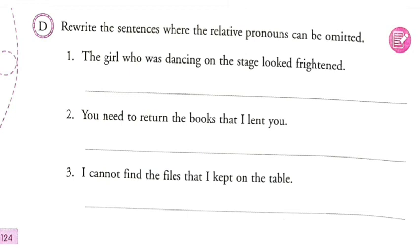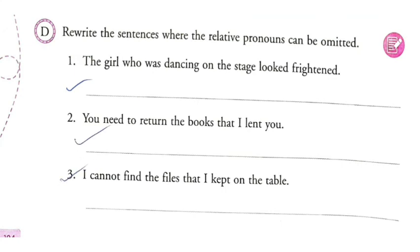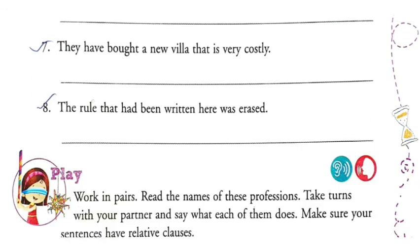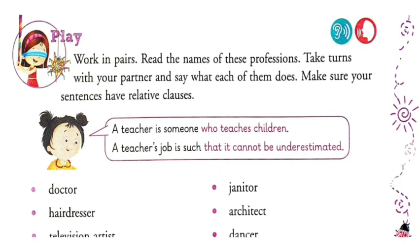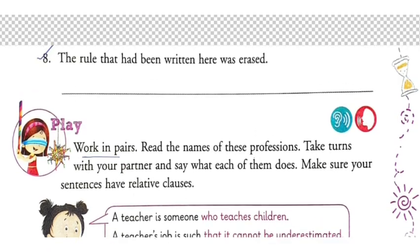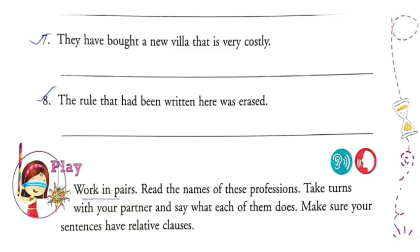Practice examples: 'The girl who was dancing on the stage looked frightened' becomes 'the girl dancing on the stage looked frightened'. 'You need to return the books that I lent you' becomes 'you need to return the lent books'. 'I cannot find the files that I kept on the table' becomes 'I cannot find the files kept on the table'. 'Those were the mangoes which were rotten' becomes 'those mangoes were rotten'. Try exercises five through eight as homework; if you cannot, I will help. Thank you.